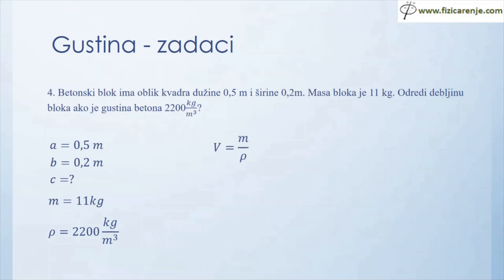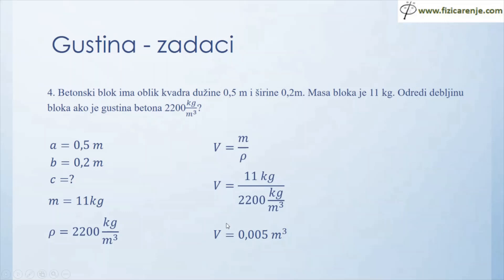Mogu odrediti zapreminu: V je jednako m kroz ρ. Data mi je masa i gustina, pa mogu da zamenim. Umjesto mase pišem 11 kg, a umjesto gustine 2200 kg/m³. 11 podeljeno sa 2200 je 0,005 — kilogram i kilogram se skrate i ostaje samo metar kubni. Dobio sam zapreminu betonskog bloka: 0,005 m³. Zapremina kvadra je a puta b puta c, pa će c biti jednako V kroz a puta b.